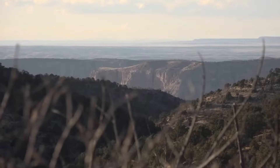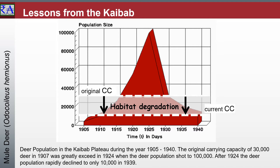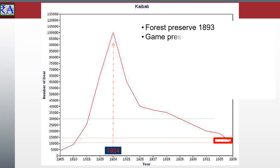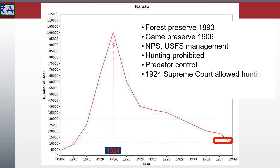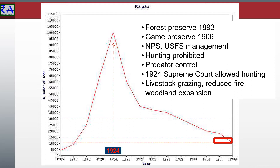Signs that Odocoileus hemionus, the mule deer population on the Kaibab Plateau, was out of control began to appear as early as 1915. The range was beginning to deteriorate as domestic livestock were placed to graze. The US Forest Service reduced the number of livestock grazing permits. By 1923, the deer were reported to be on the verge of starvation, and range conditions were described as deplorable. The Kaibab Deer Investigating Committee recommended that all livestock not owned by local residents be removed immediately, and that the number of deer be cut in half as quickly as possible. Hunting was reopened, and during the fall of 1924, 675 deer were removed by hunters. However, these deer represented only one-tenth of the number of deer that had been born that spring.